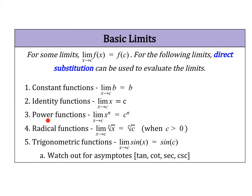We can also do direct substitution for power functions — notice we're just substituting c. For rational functions, however, you need to make sure that we're not taking a square root of a negative number, so it has to be a real number when we substitute. Trigonometric functions we can also use direct substitution for. However, some trig functions have asymptotes and therefore domain restrictions, so you need to watch out for that with tangent, cotangent, secant, and cosecant. Of course, if you try direct substitution and end up with something undefined, then this is not the way to go — but most of the time it will work out pretty nicely.